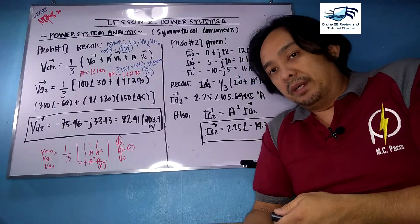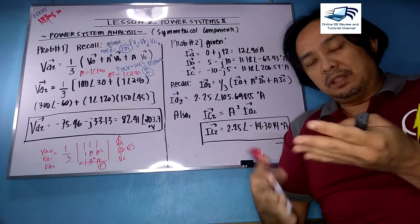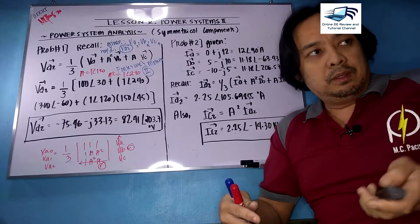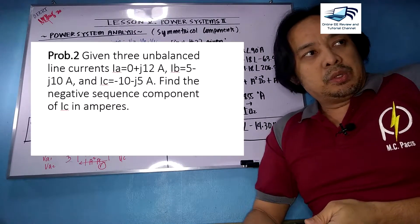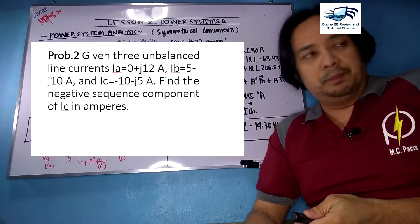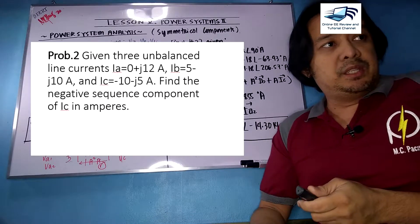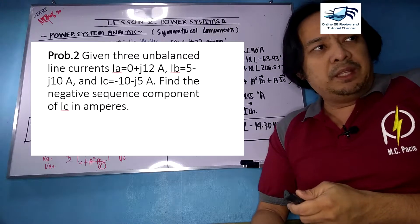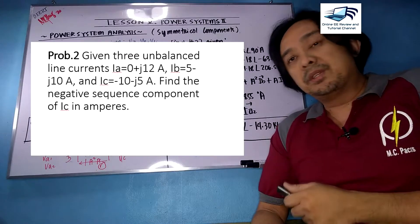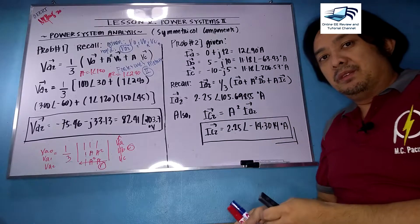Let us move to problem number 2. Given three unbalanced currents: IA = 0 + j12, IB = 5 − j10 amperes, and IC = −10 − j5 amperes. Find the negative sequence component of the line current IC in amperes.